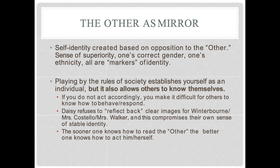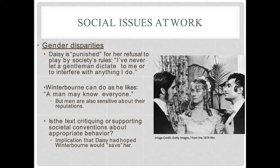If Daisy becomes this elusive other that cannot be pinned down, it causes social unease and anxiety within the group around her — because of that necessity of identifying the self through opposition to the other. When you have a realist text, remember that realism is always trying to teach in a certain way, and social issues are always dealt with pretty explicitly. One of the things you see working in Daisy Miller is gender disparity, brought up quite prominently through the conversations between Daisy and Winterbourne and through the conclusion of the novel.